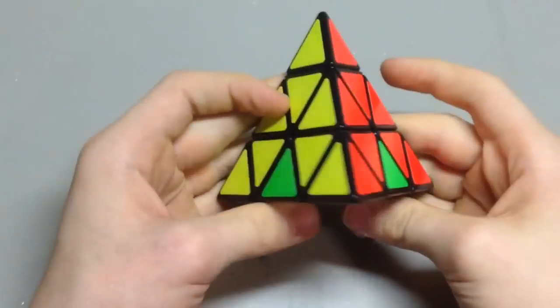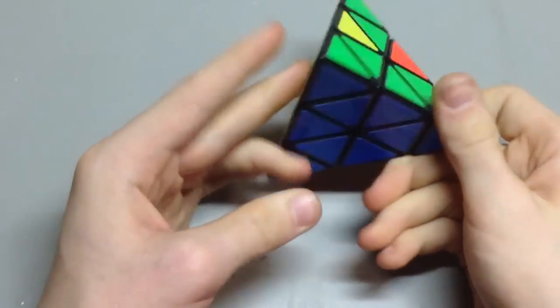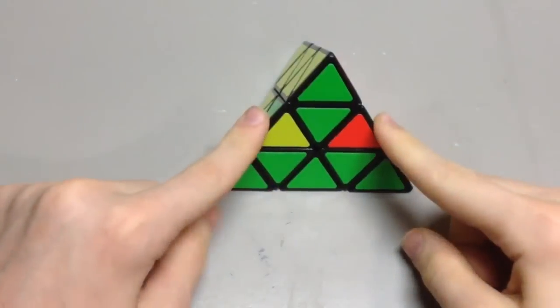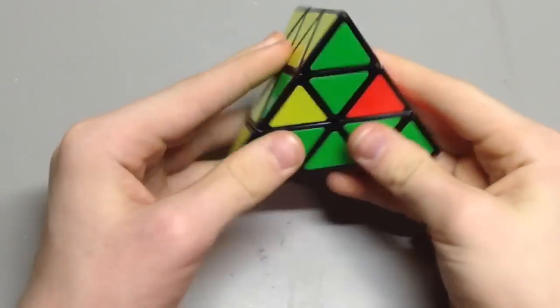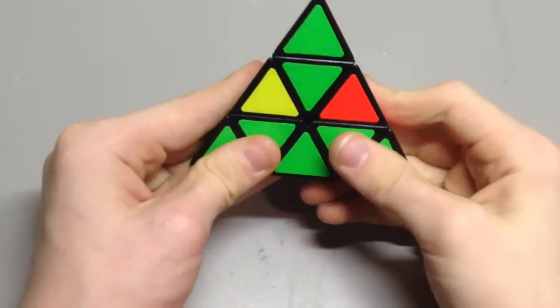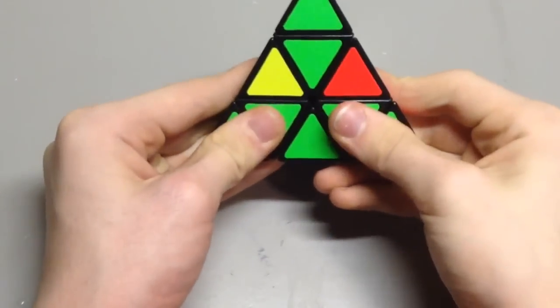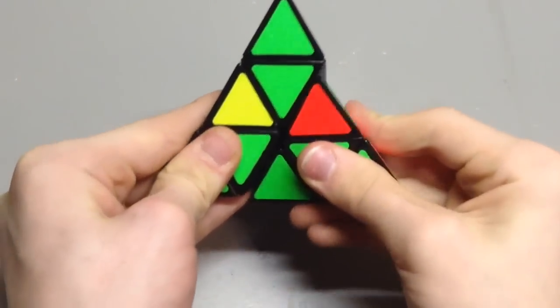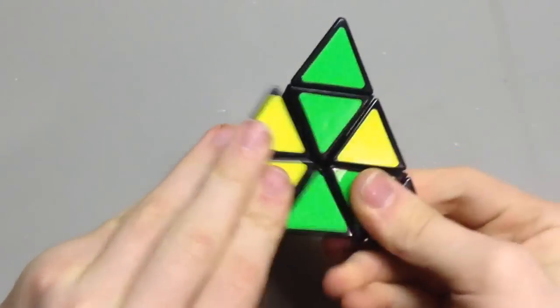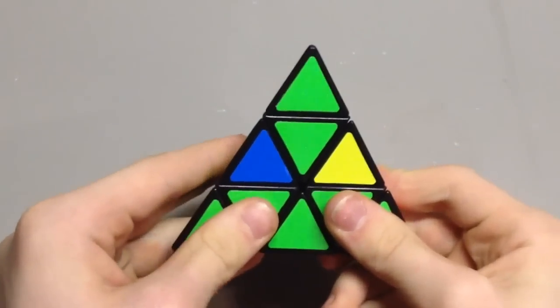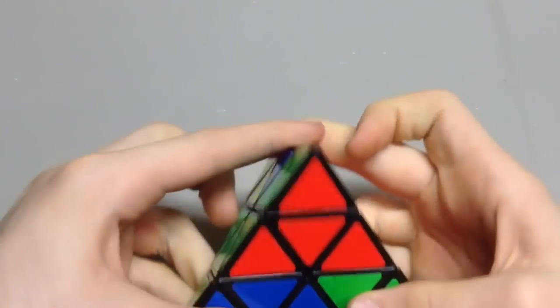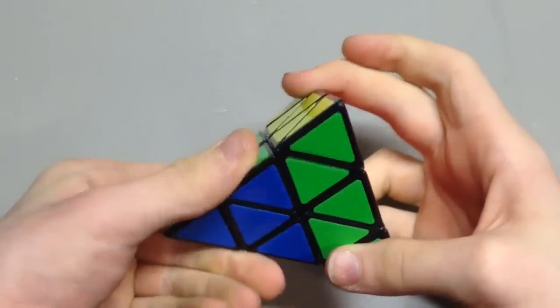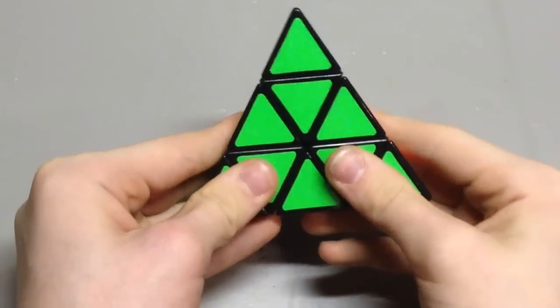Then there's this one where it kind of looks like parity, where you just have these two and they're flipped. So you just need to flip them. And it's a pretty simple algorithm. You just do that thing that we were doing earlier. You go R' L R L', then you do U L' U' L. I'll show you again.